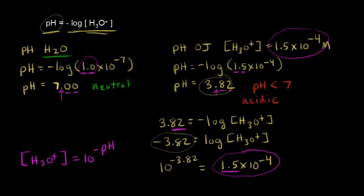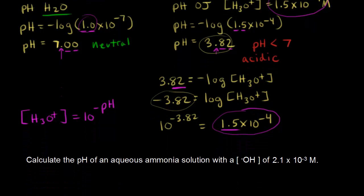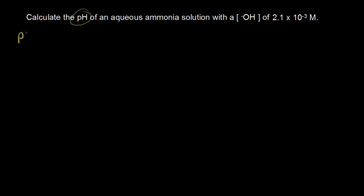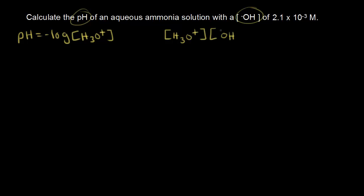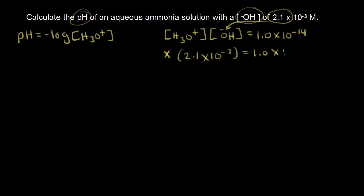We found the pH for water and orange juice; now let's do the pH of ammonia. Calculate the pH of an aqueous ammonia solution with a hydroxide ion concentration of 2.1 times 10 to the negative 3 molar. Since pH requires hydronium ion concentration, we use the relation: [H3O+] times [OH−] equals Kw, which is 1.0 times 10 to the negative 14. So X times 2.1 times 10 to the negative 3 equals 1.0 times 10 to the negative 14.